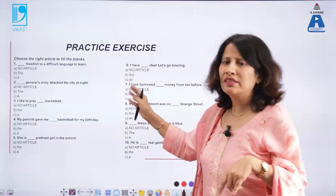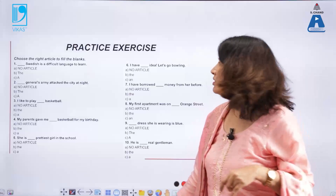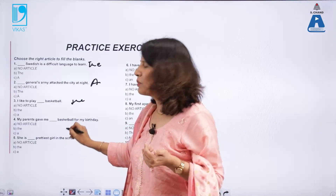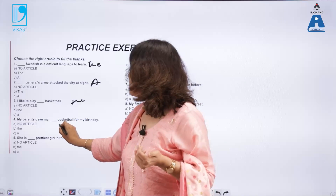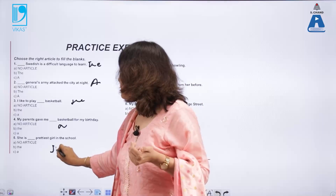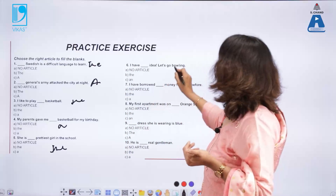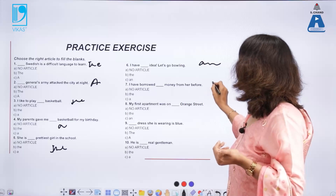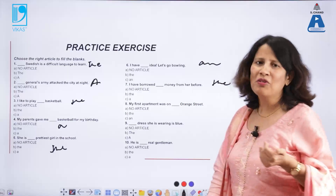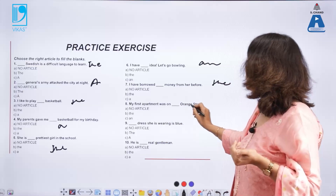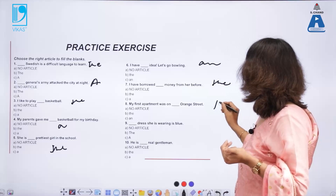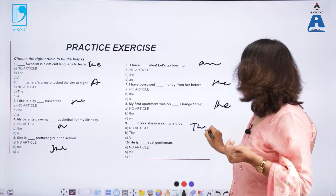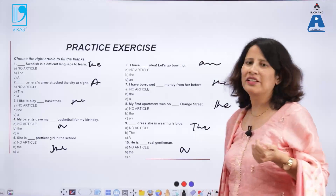Here are some practice exercises to check article usage: 'I like to play football or basketball.' 'My parents gave me a basketball for my birthday.' 'She is the prettiest girl in the school.' 'I have an idea — let's go bowling.' 'I have borrowed the money from her before.' 'My first apartment was on the Orange Street' — because we are specifying which street. 'The dress she is wearing is blue.' 'He is a real gentleman.'